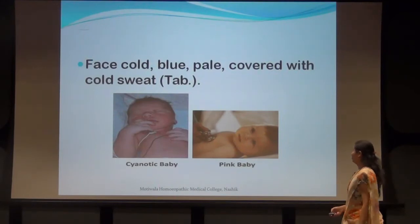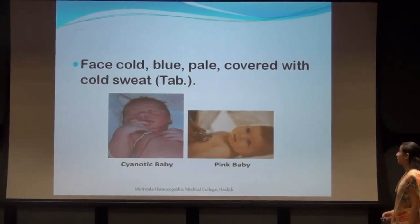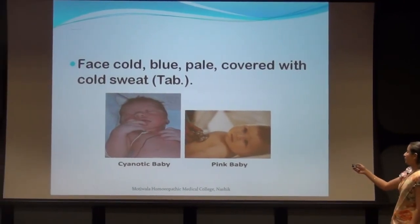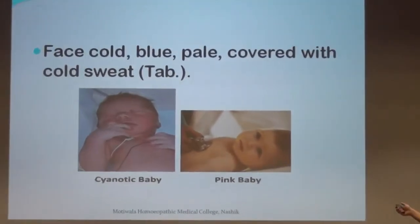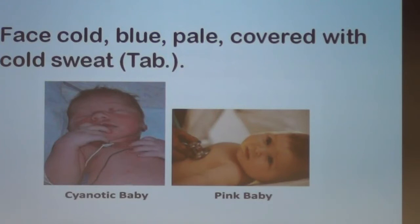The face is very cold, blue, pale, covered with cold sweat. You can see the cyanotic baby and the pink baby — the pink baby is a normal child, and the cyanotic baby shows cyanosis. The puffiness of the face and sinuses are particularly visible in that baby.